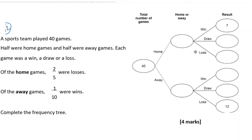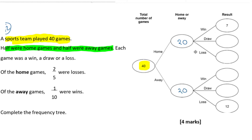Question 12: A sports team played 40 games, half were home games and half were away games. Each game was a win, a draw or a loss. Going through line by line: 40 games total is already on the tree. Half of 40 is 20 home games and 20 away games.